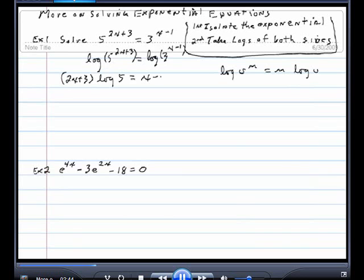And on this side I'll get x minus 1 times the log of 3. That's the log base ten of 3, the exponent of ten that gives you three.